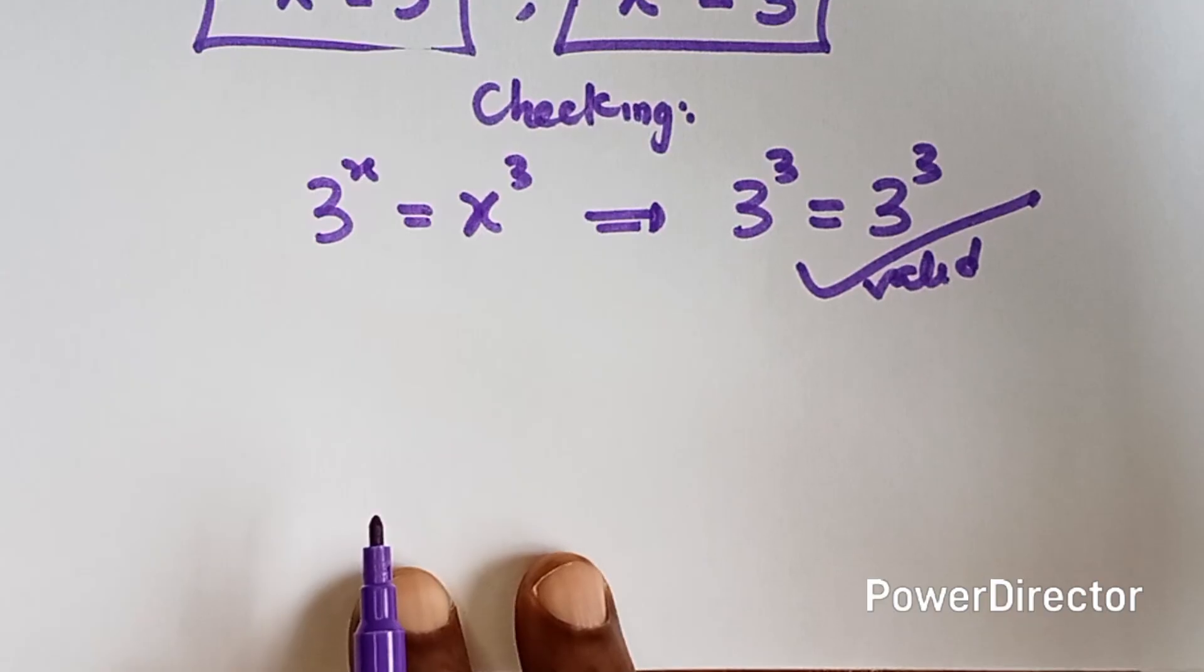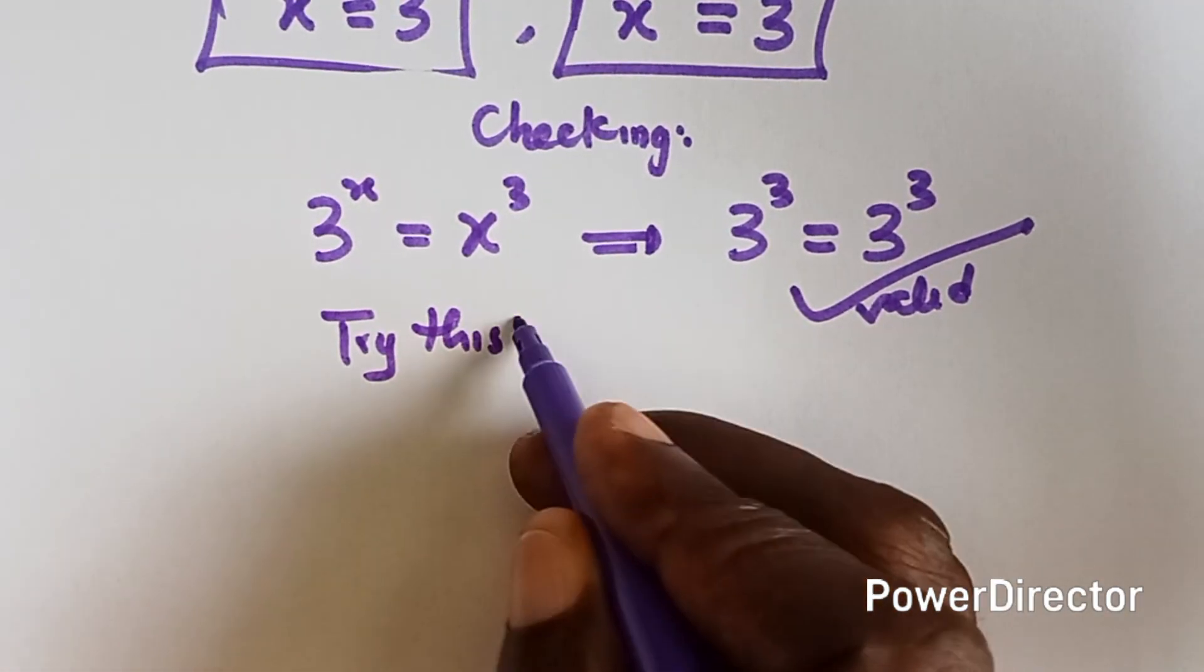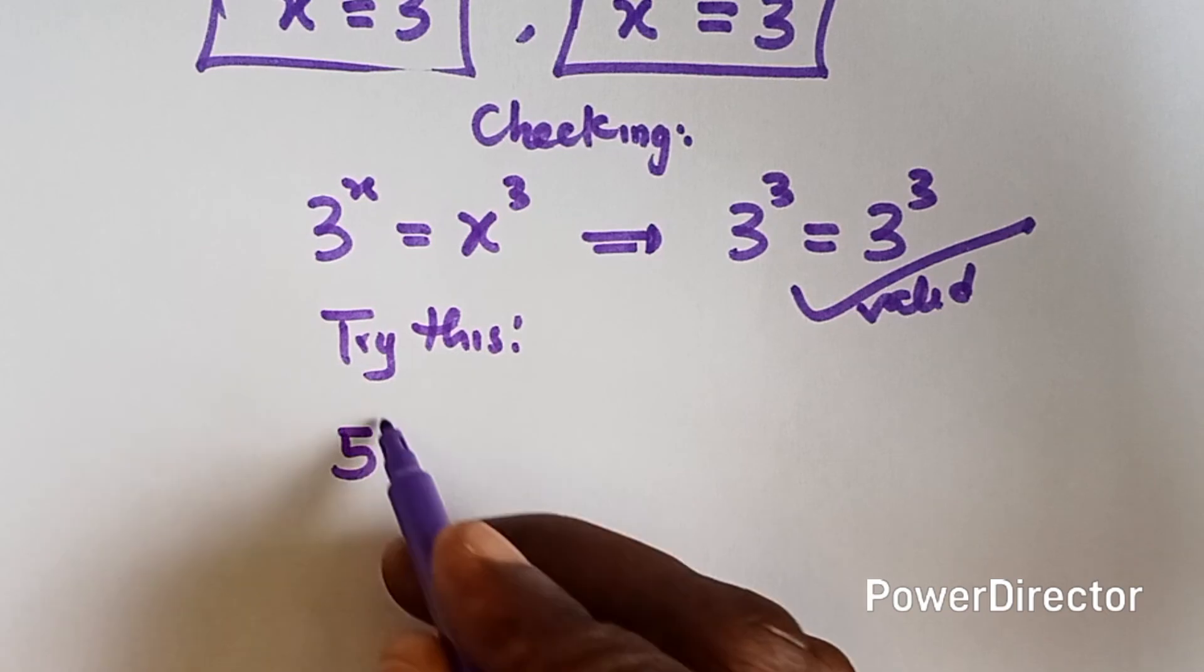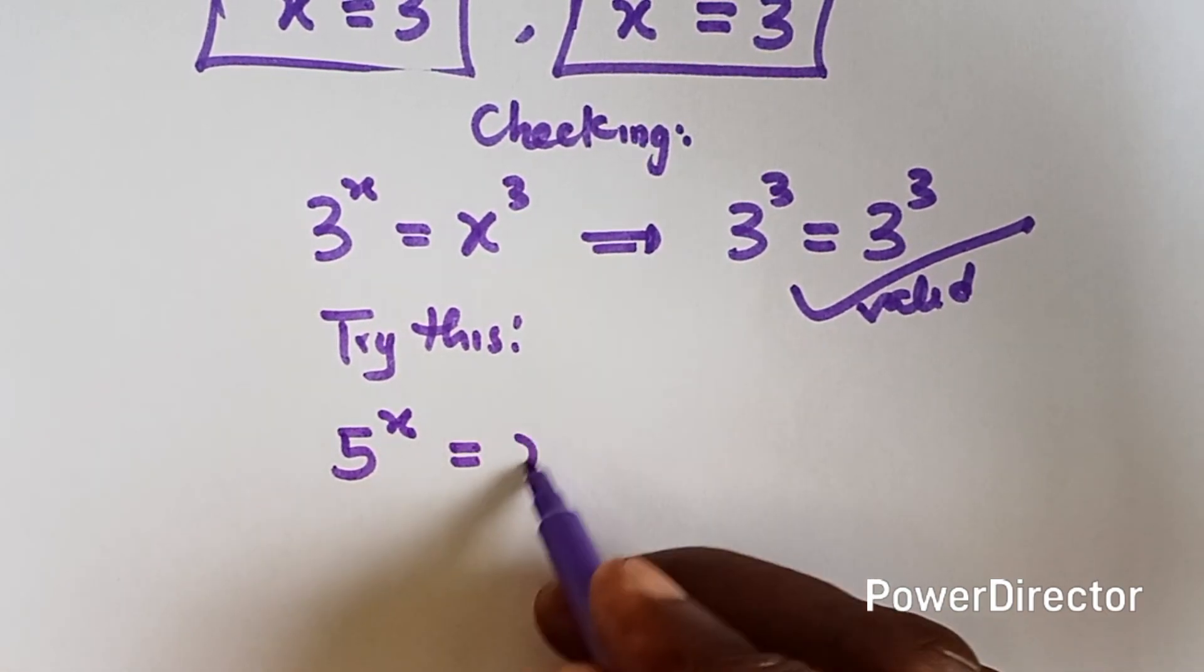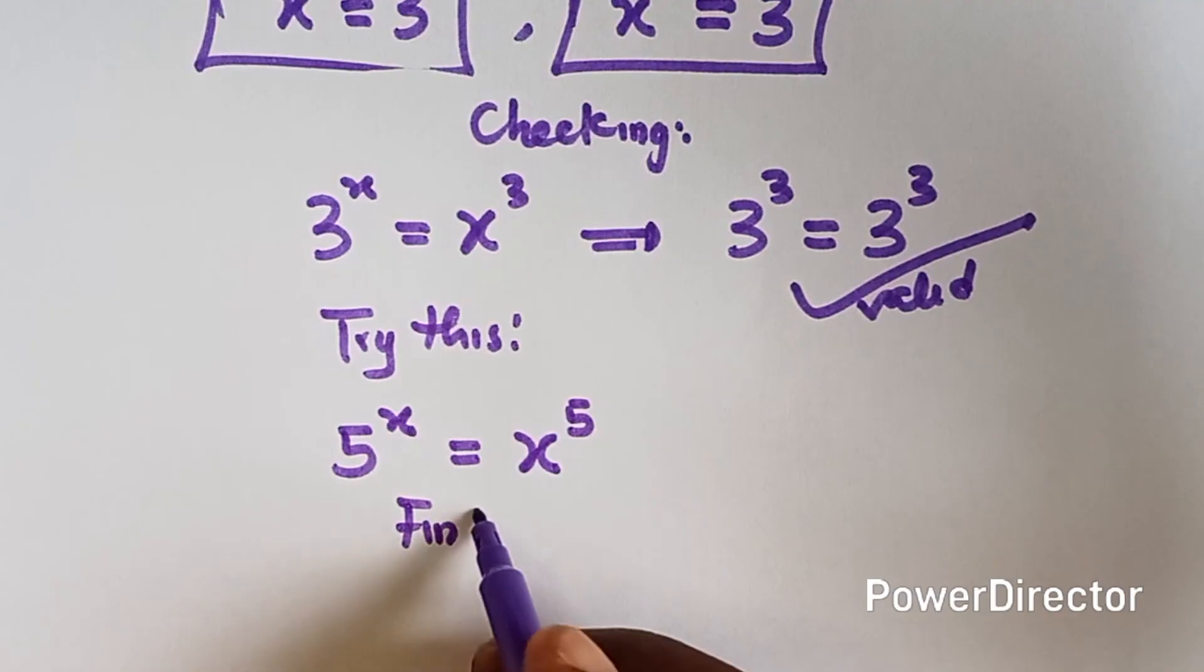Now let's solve something similar to that. Let's try to solve this. We have 5 raised to power x equals to x raised to power 5. So let's find x.